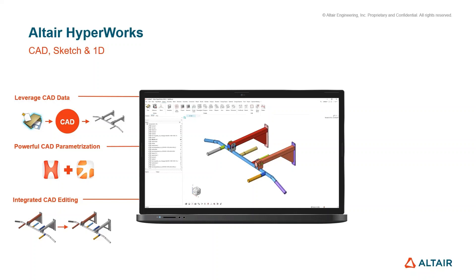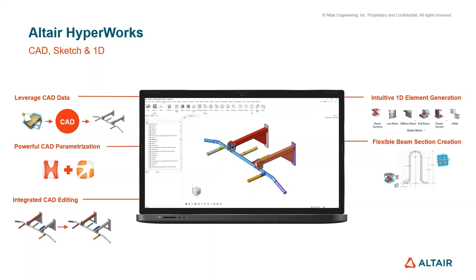We'll also review integrated CAD editing within the GUI, looking at the different options we have with direct editing to the CAD, all staying within that single GUI within Hyperworks. In the second half we'll look at intuitive 1D element generation, flexible beam section creation from a standard library or custom sections using the sketch tool, and efficient conversion from 1D to 2D or 3D elements to increase fidelity within your existing FE model.